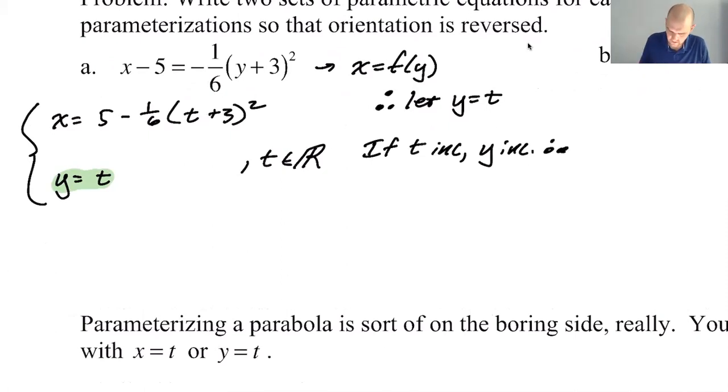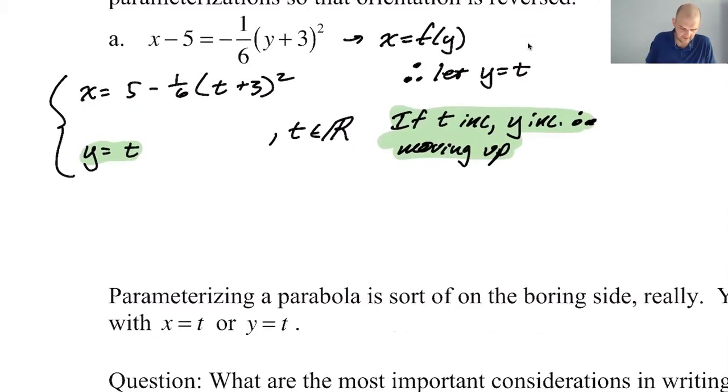So we're going to be moving up. So the rate of change of y is positive. You're always increasing. So what I'm going to do to reverse that is I'm going to let y equal negative t, and then we'll be moving down. So I'm going to let y equal negative t, and then this will be 5 minus 1/6, I'm just going to write negative t plus 3 and then squared, and t is going to be an element of the reals.